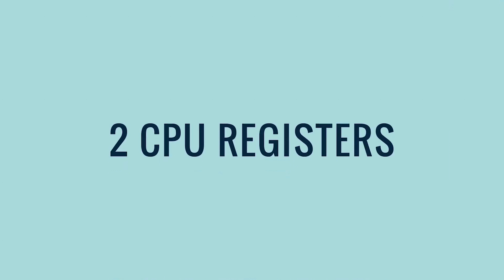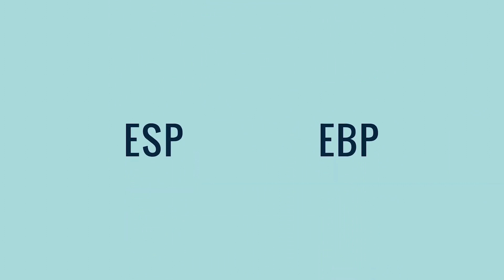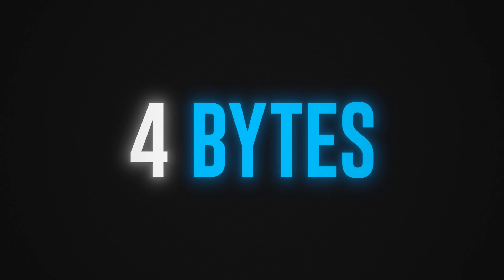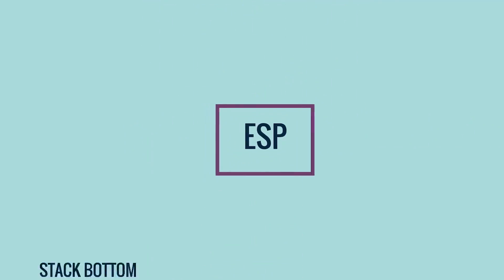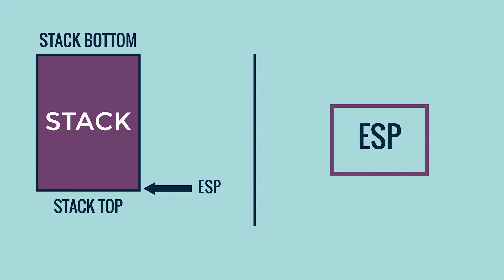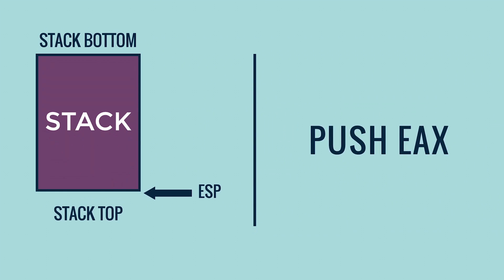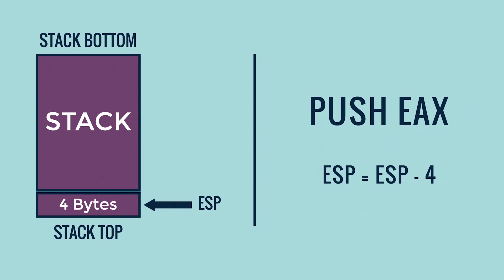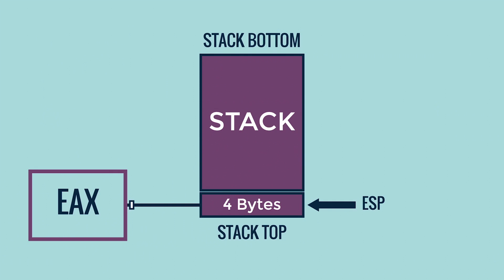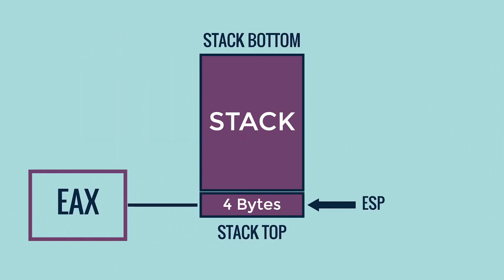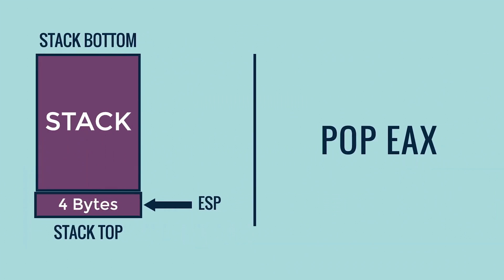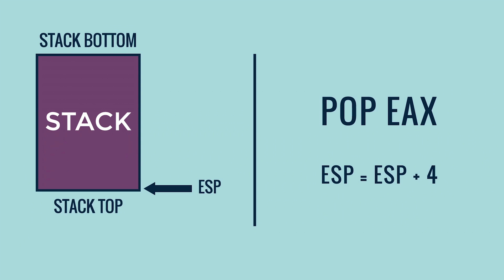There are two CPU registers which are used to manipulate the memory stack of a thread: ESP and EBP. Both of these registers are four bytes in size, just like the general purpose registers, except the purpose of these two registers is to manipulate the memory stack. The ESP register is called the stack pointer. The ESP register will always point to the top of the stack by holding its memory address. Whenever the push instruction is executed, it will allocate four bytes of space on top of the stack by subtracting four bytes from the value of ESP, and the value of the register will be copied to the allocated space. The pop instruction will do the opposite — it will first copy the four bytes of data from the top of the stack to the register, then deallocate the four bytes by simply adding four to the value of ESP. Whether we push or pop data on top of the stack, the ESP register will always point to it.